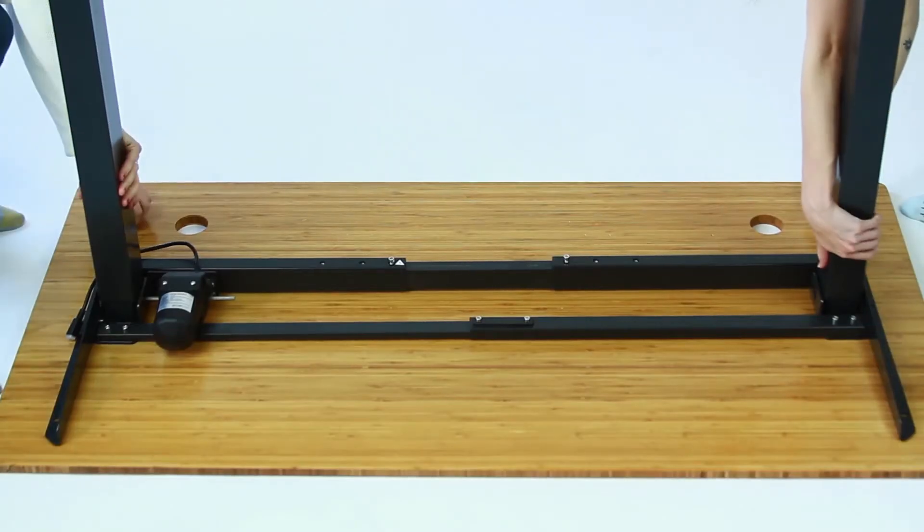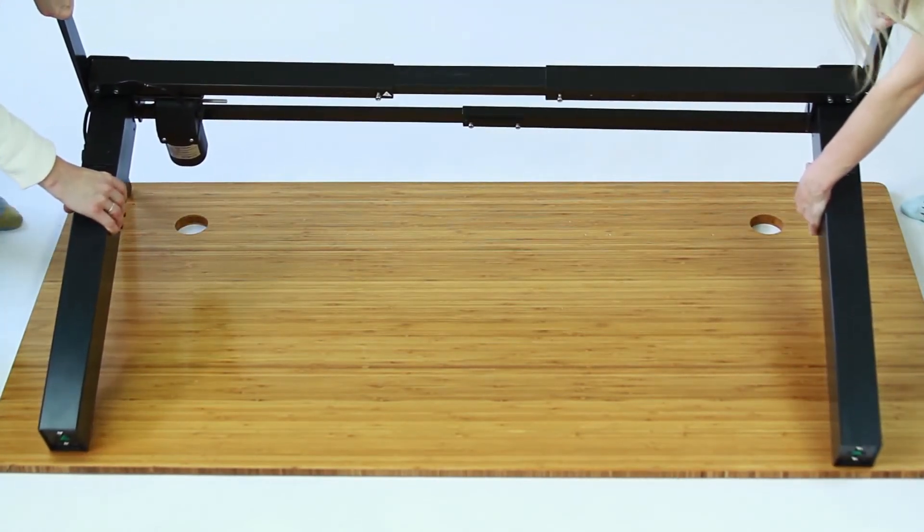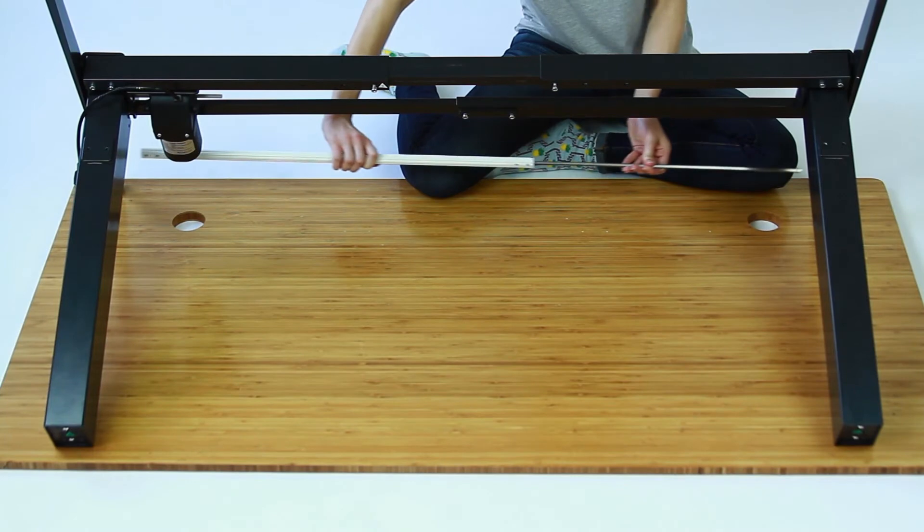Now this part is optional but I highly recommend it. After the middle slats have been installed we're gonna tip the desk forward so it sits at an angle. This makes it much easier to install the driveshaft. Just be careful not to scratch your top when tipping the desk. Now remove the driveshaft from the outer rod.